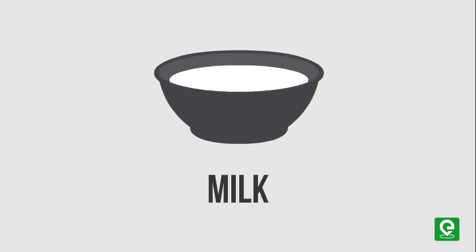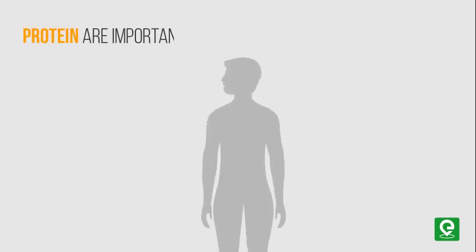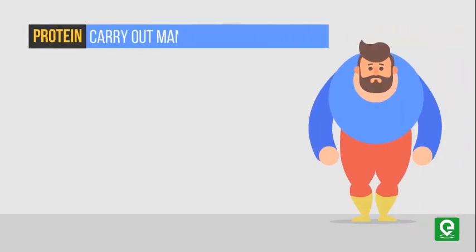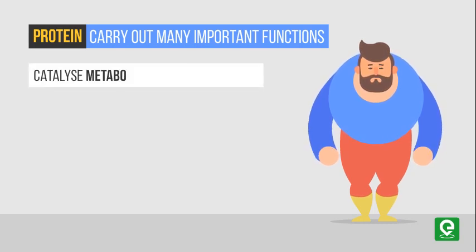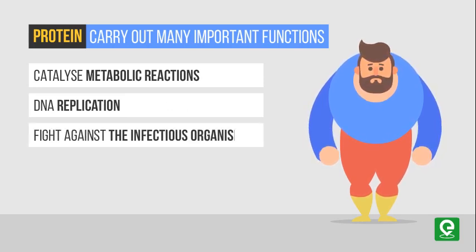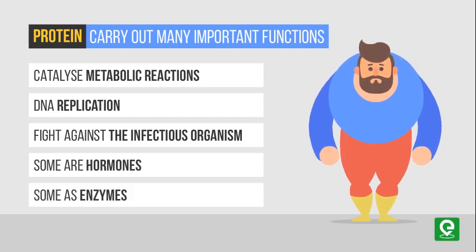Proteins are important components of every cell in the body because they carry out many important functions, such as catalyzing metabolic reactions, DNA replication, and fighting against infectious organisms. Some function as hormones, and some as enzymes.